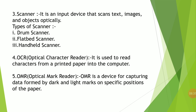The next input device is OMR — Optical Mark Reader. OMR is a device for capturing data formed by dark and light marks on a specific position of the paper. It is a special device that can detect marks made with ink or pencil. OMR requires a special printed paper that contains boxes and circles. Nowadays, in various entrance examinations for marking objective type questions, the answer sheets are inserted into OMR for calculating scores. It has great speed and the marking is error-free.